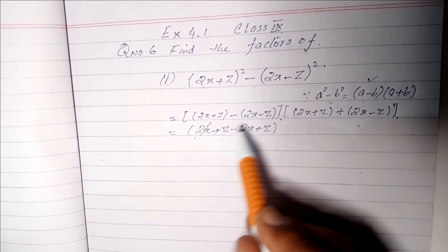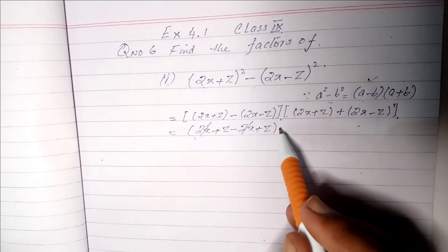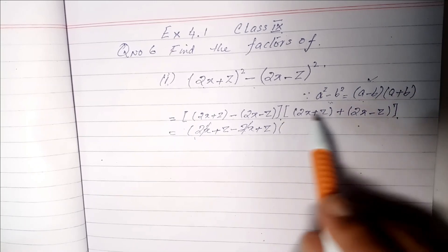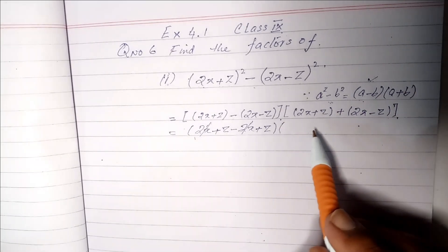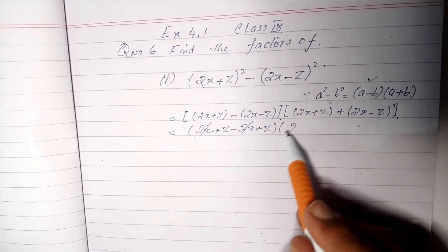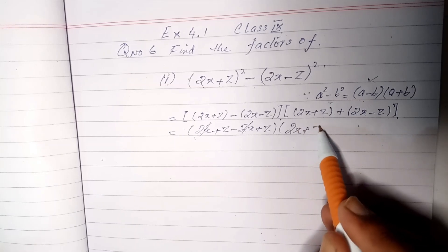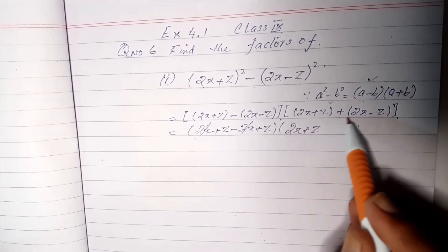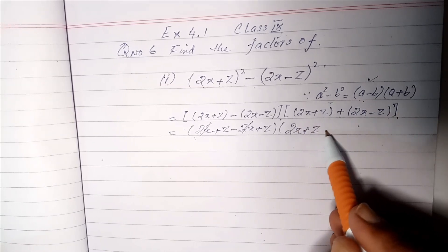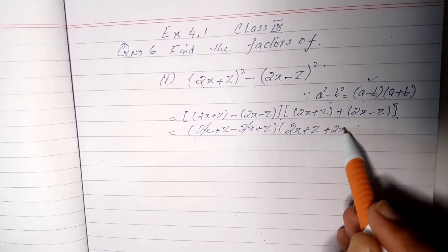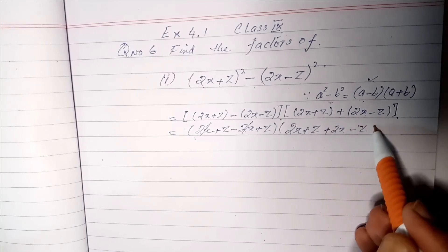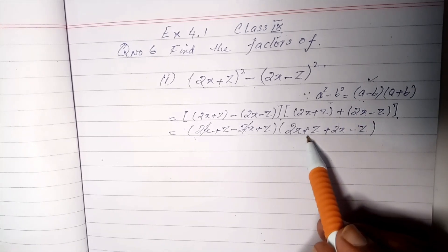Now if we look at the other bracket, 2x+z, there is a plus sign, so there will be no sign change. It will be plus 2x-z, which gives us 2x+z+2x-z.